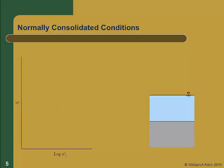To understand how field conditions can differ from laboratory conditions, we are going to look at two different scenarios. The first is a case of normally consolidated conditions, and in fact this is a scenario we have already looked at in a previous presentation, but we are going to go over it again this time with some additional information.